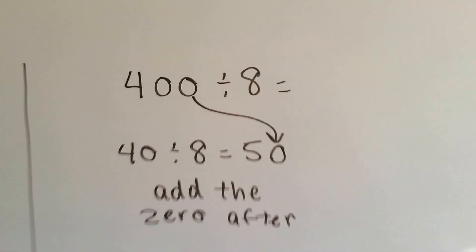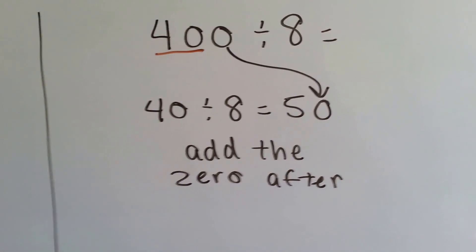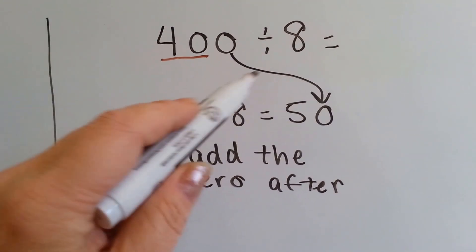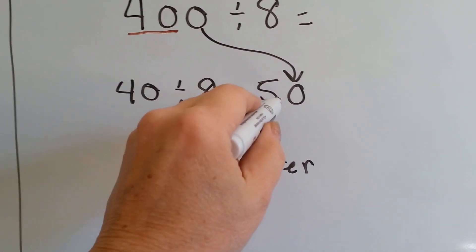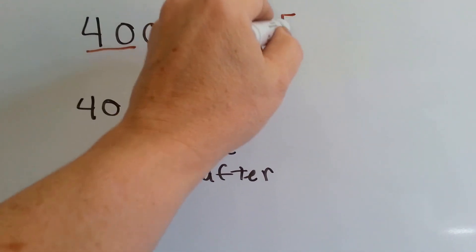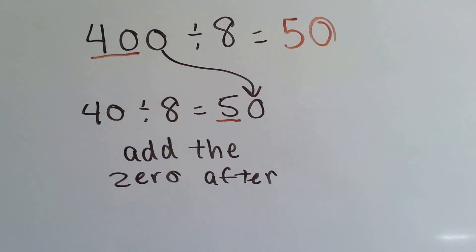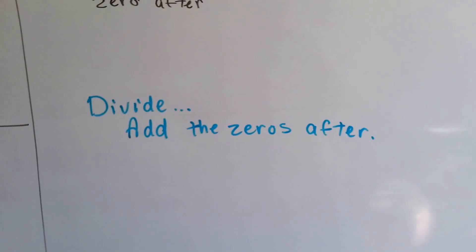One last one. We have 400 divided by 8. So we do 40 divided by 8. And 8 times 5 is 40. So 40 divided by 8 becomes 5. And then we add the 0 after. So the answer is 50. Add the 0 after.